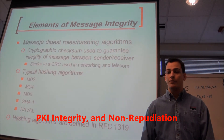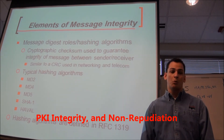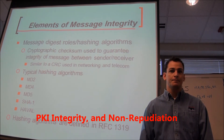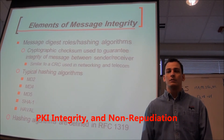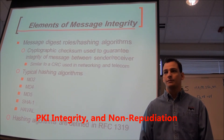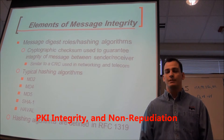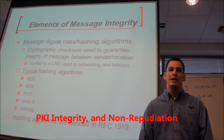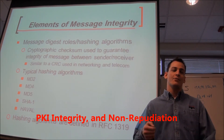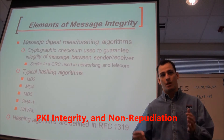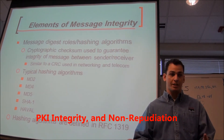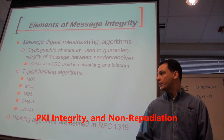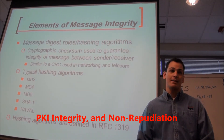HAVAL is variable. MD5 is 128-bit. SHA is 160-bit. That's the size of the hash you get when you're done — it's not a key size, because a key is from encrypting and decrypting. This is just a 128-bit or 160-bit output. It's the output — not a key, because keys are from encrypting and decrypting.